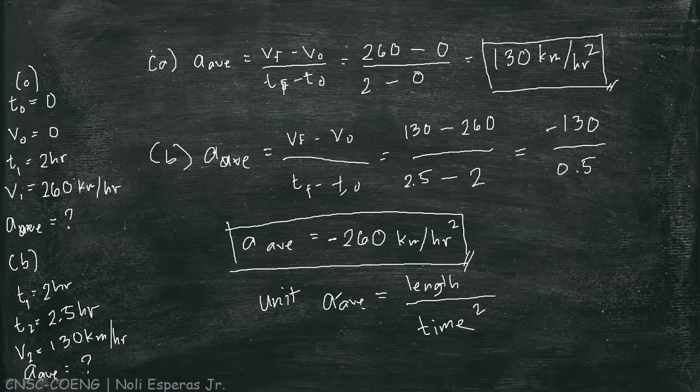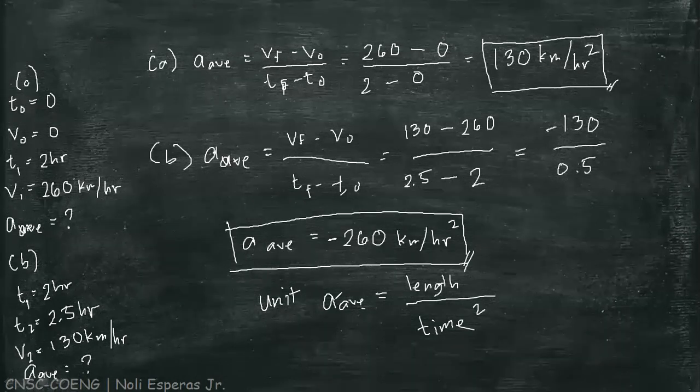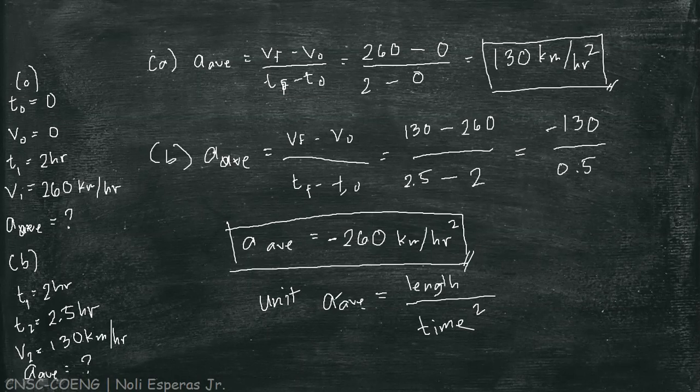Negative acceleration denotes that the object is slowing down, and positive acceleration denotes that it is speeding up or getting faster. That does not necessarily mean that it changes its direction. While in velocity, positive and negative values represent the direction of displacement, either positive or negative.